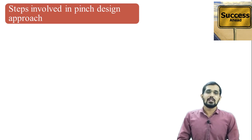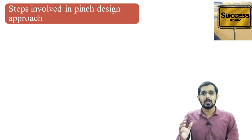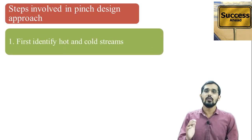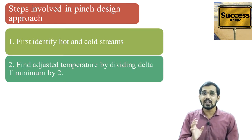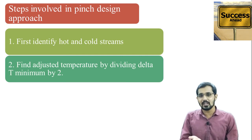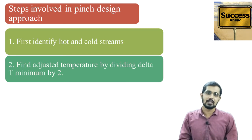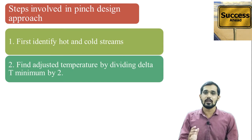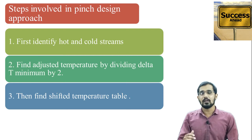Now we will see the steps involved in the pinch design approach, which is also known as the temperature interval method. The first step is to identify all hot streams and cold streams. After that, find the adjusted temperature using ΔTmin. To find it, divide ΔTmin into two equal halves — for example, if ΔTmin is 20°C, the adjusted temperature is 10°C. In the last lecture, where ΔTmin was 10°C, the adjusted temperature was 10 ÷ 2 = 5°C. The next step is to find the shifted temperature table.